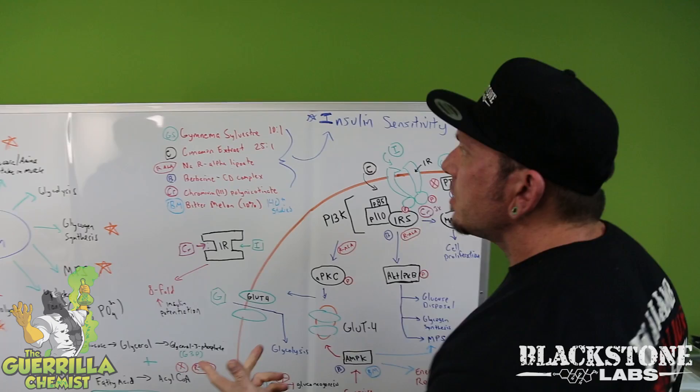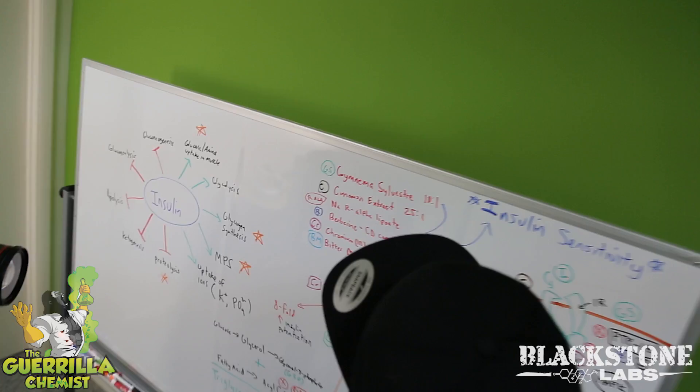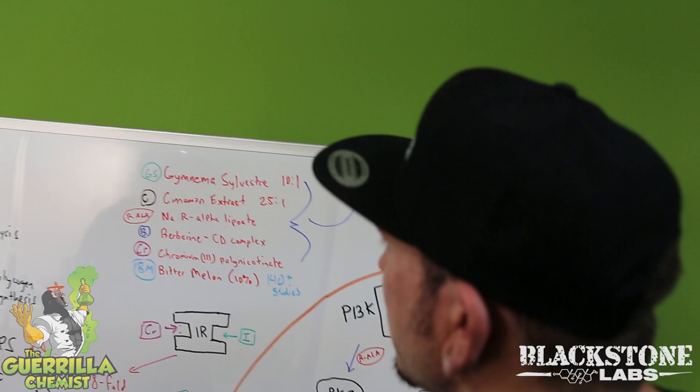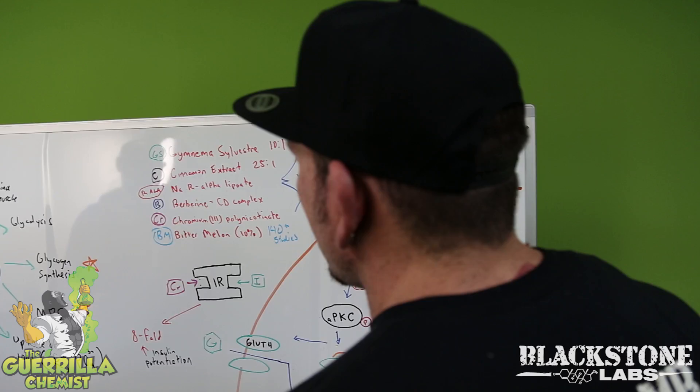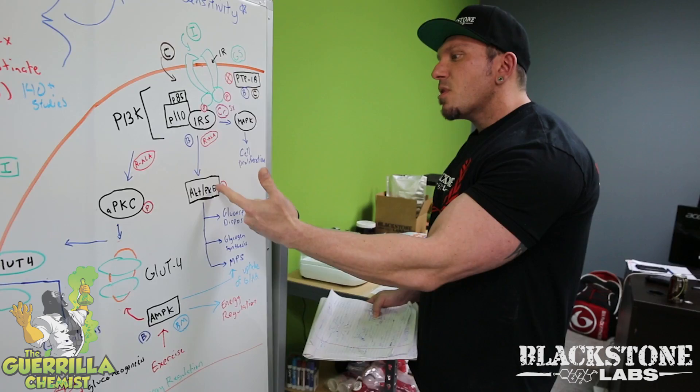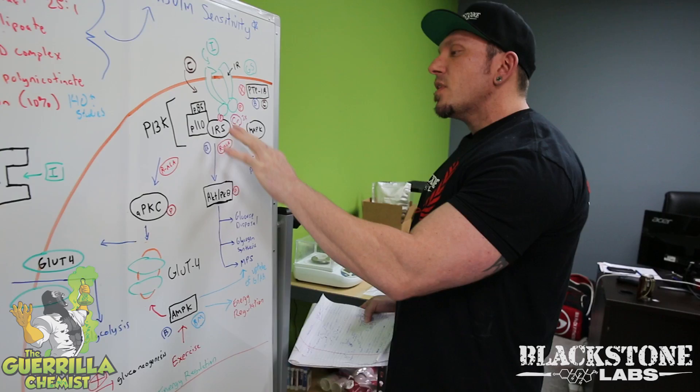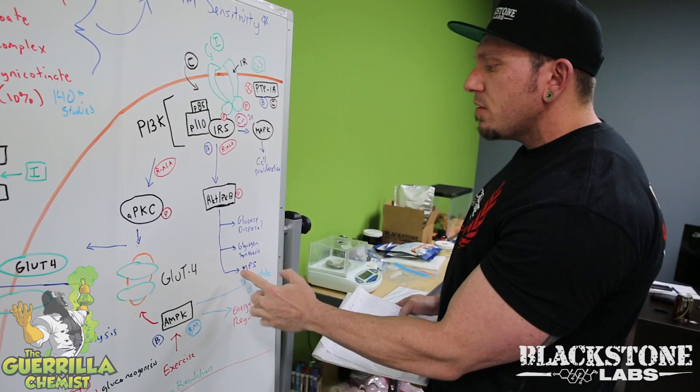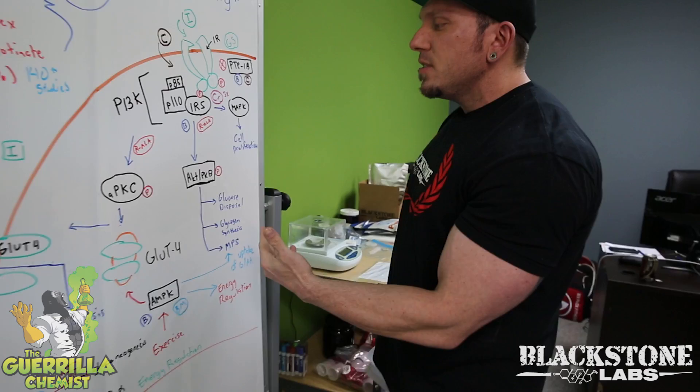The third ingredient is R-ALA — we use the sodium salt version of R-alpha lipoic acid. The R version is the active isomer of this compound; the S version has problems including polymerization. R-ALA potentiates the insulin signaling process: it increases insulin receptor substrate phosphorylation and also increases phosphorylation of the AKT pathway, thereby increasing glucose disposal, glycogen synthesis, and muscle protein synthesis.